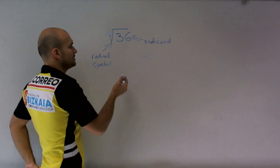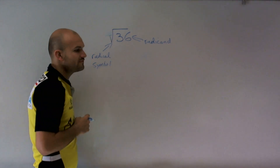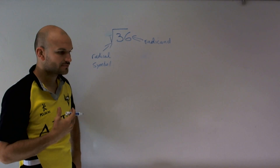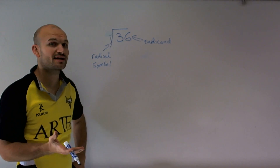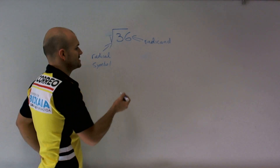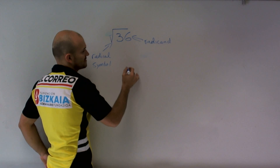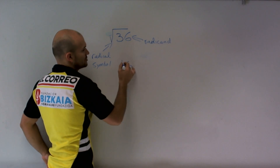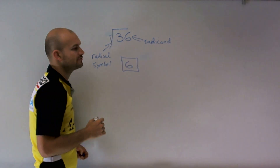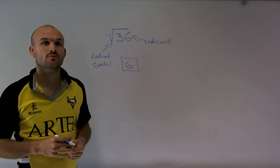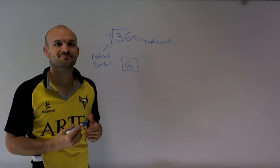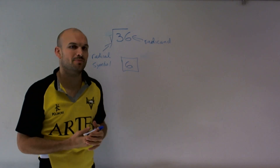When you take a look at all the factors of 36, the only one that I can multiply by itself to give me 36 is going to be 6. So the answer — the square root of 36 — we can simplify that to the number 6.